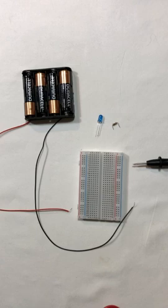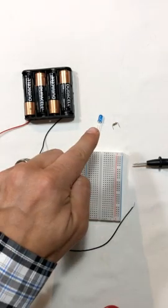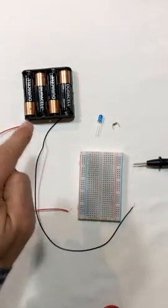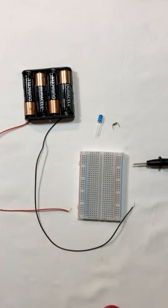In this activity you're going to create a simple circuit using a breadboard, an LED, a resistor, and four AA batteries.